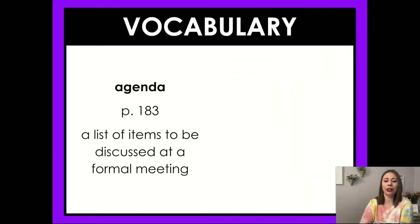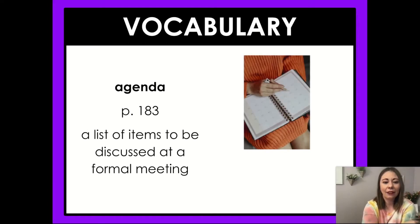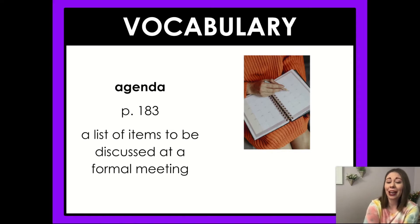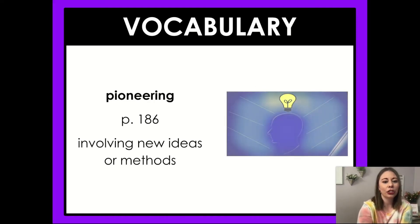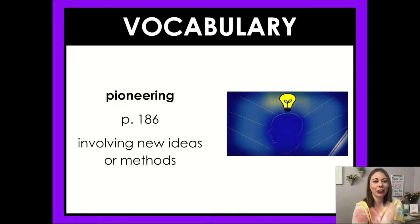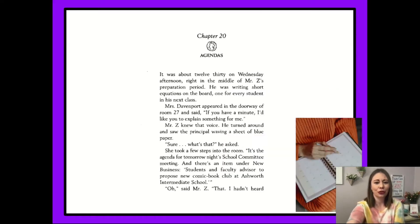For vocab, you have the word agenda. An agenda is a list of items to be discussed at a formal meeting. You can think of an agenda like a list or a calendar, where you list things that are going to be discussed. Then we have the word pioneering, which means involving new ideas or methods — something that is fresh and new.